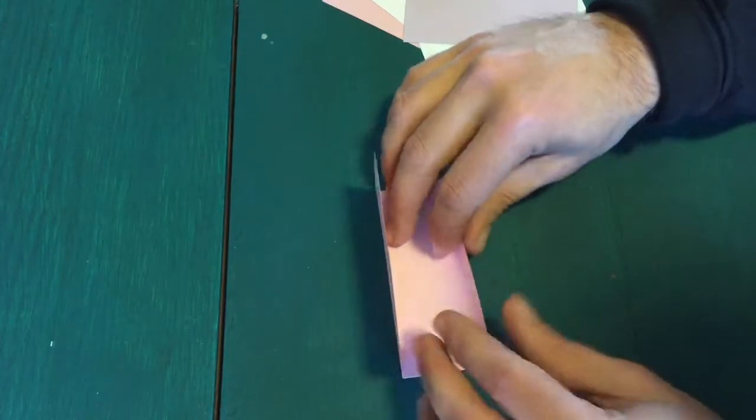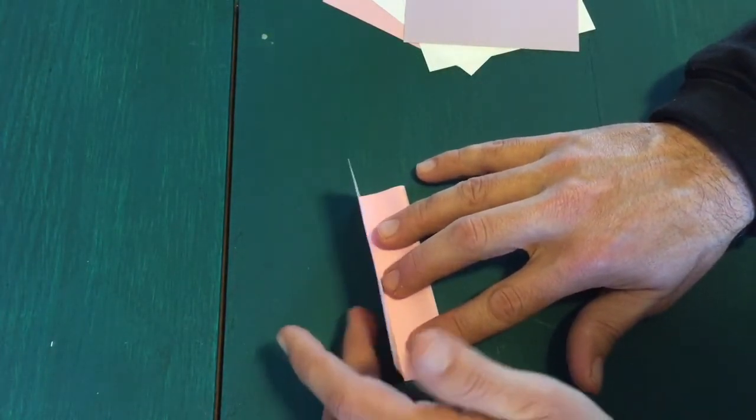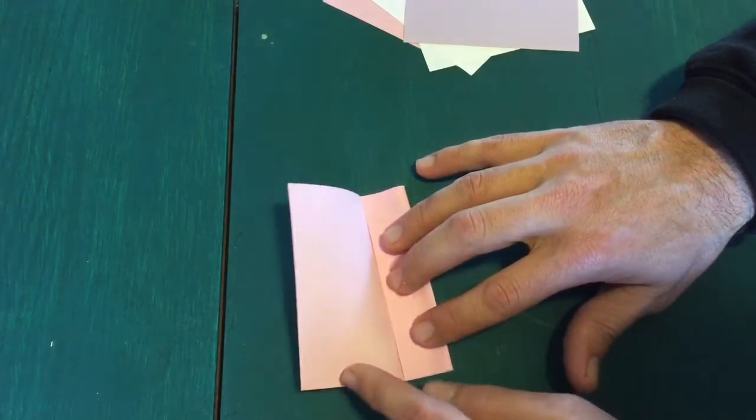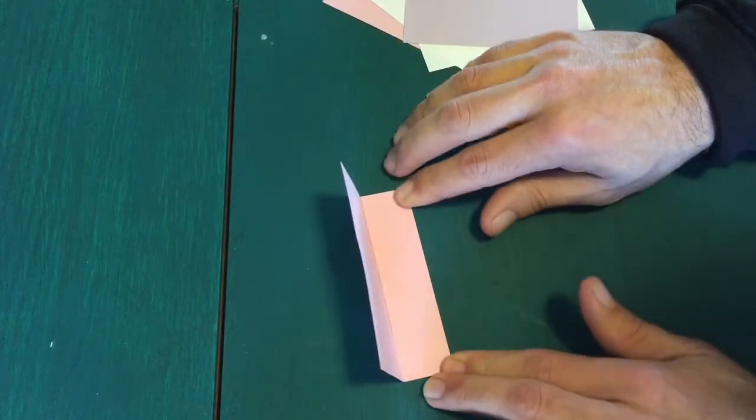Now you probably learned in math class that half of a half is a fourth. So we're going to use the half fold line to fold two quarter fold lines parallel to the half fold line.